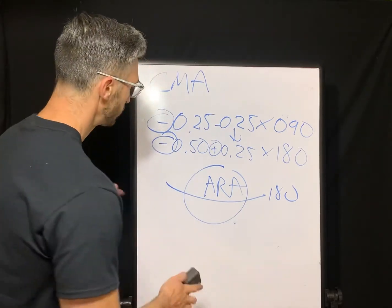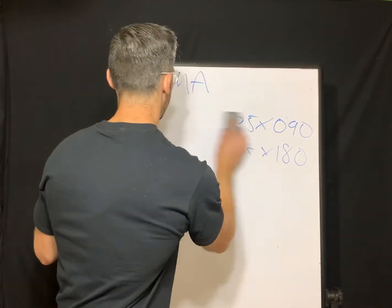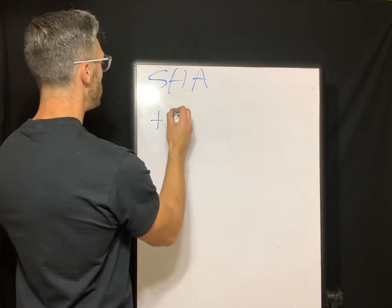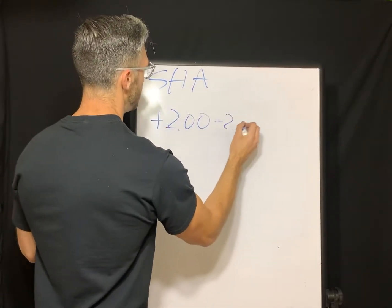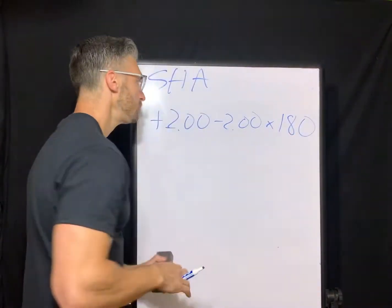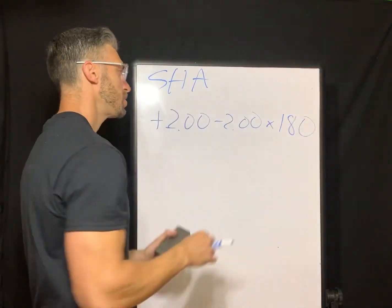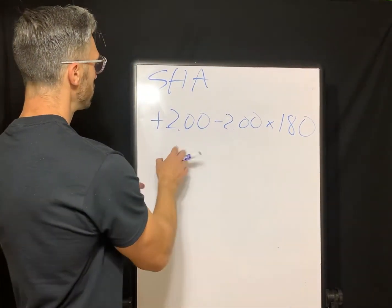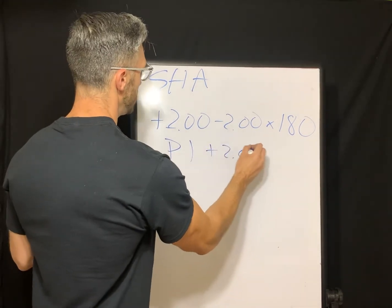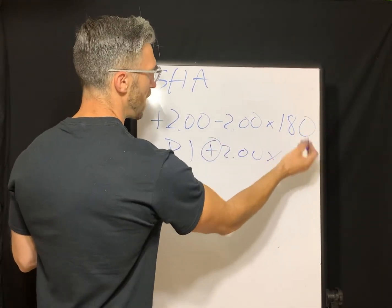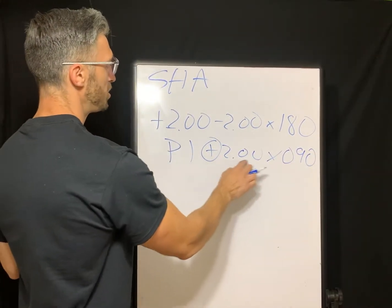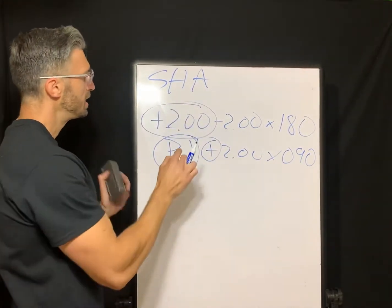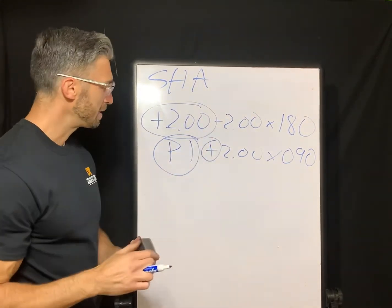Now we'll do simple hyperopic astigmatism. The prescription: plus two, negative two, axis 180. To classify it, add the cylinder to the sphere: plus two minus two gives plano. Drop it down, change the sign, rotate the axis 90 degrees, so we get plano plus two axis 90. Comparing the two sphere powers — plano for one meridian, plus two for the other — that's simple hyperopic astigmatism.